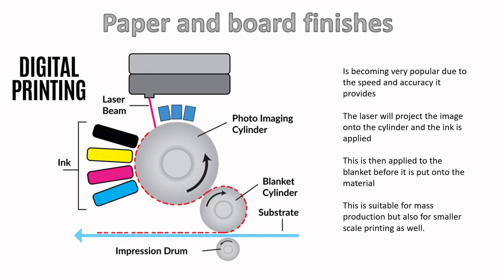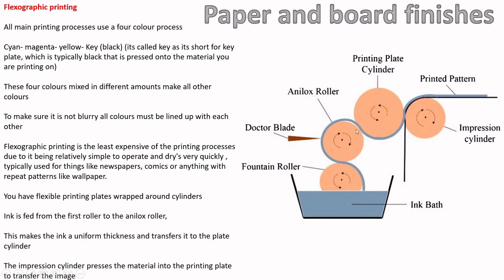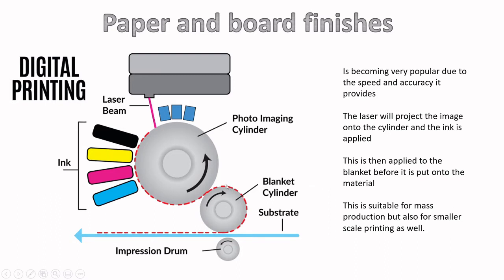Digital printing works in a similar way but on a smaller scale, and is more popular because it's faster and more accurate — you can even buy domestic versions. A laser projects the image onto the photo imaging cylinder, ink is smoothed out by a blade, transfers to the blanket cylinder, and the substrate runs through while the impression drum applies pressure to print the image cleanly onto the material.